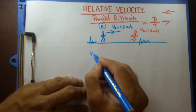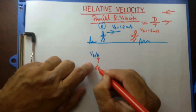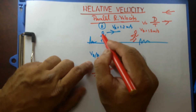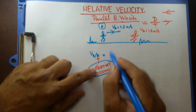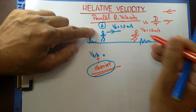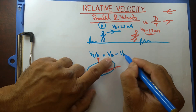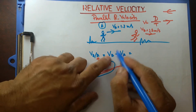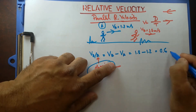What is the velocity of B relative to A? The main entity here is the observer A. Since both are moving in the same direction, both are positive. Velocity of B relative to A equals velocity of B minus velocity of A — that's 1.8 minus 1.2, which gives 0.6 meters per second.